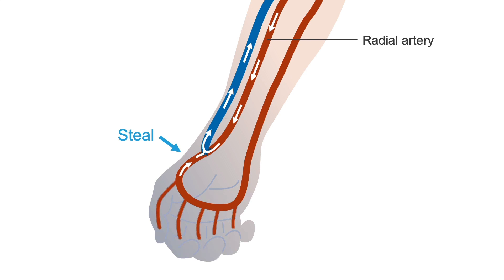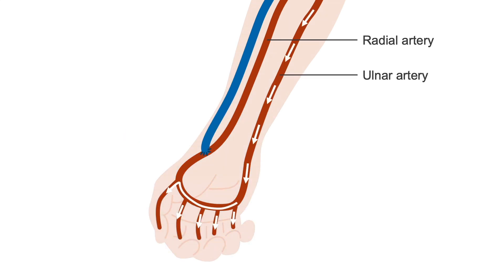However, there are two arteries in the forearm that supply the hand, so if the radial artery blood is stolen by the fistula, then the ulnar artery can take over supplying the hand.